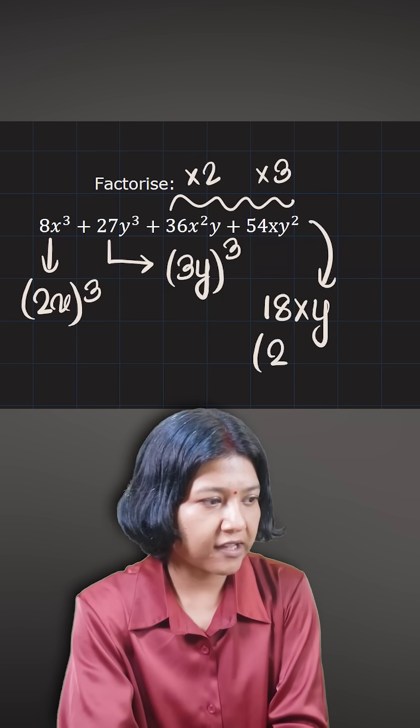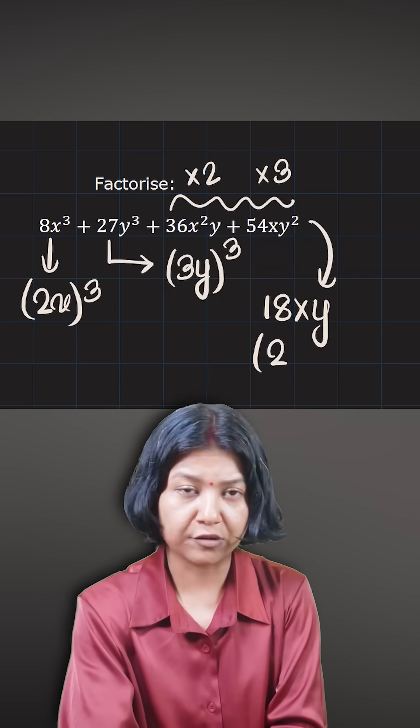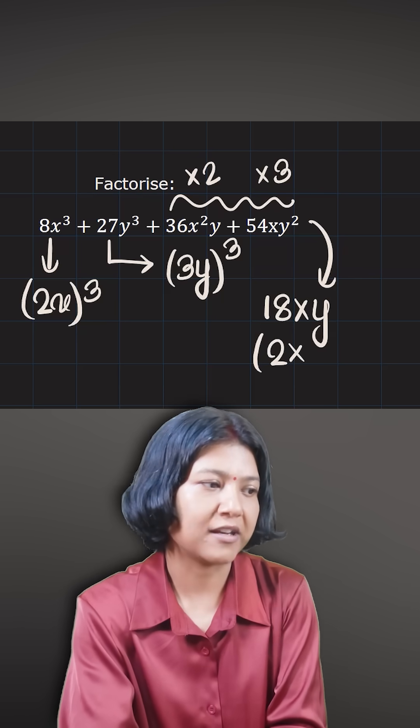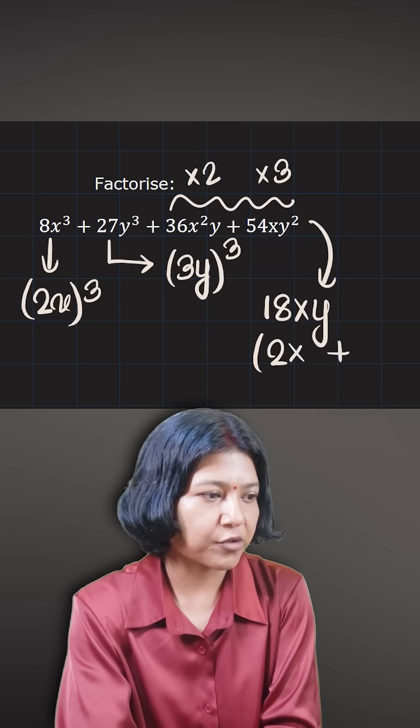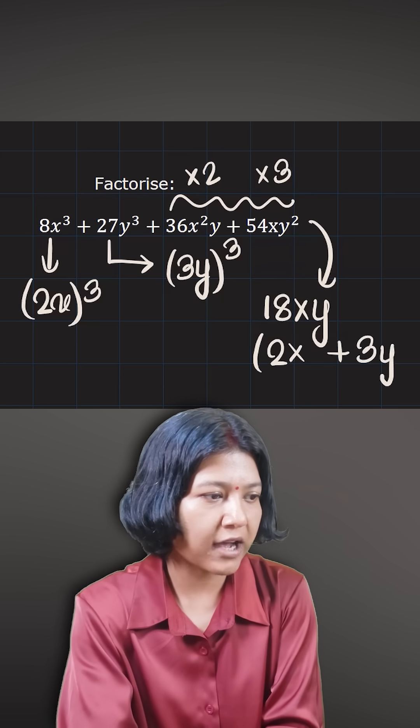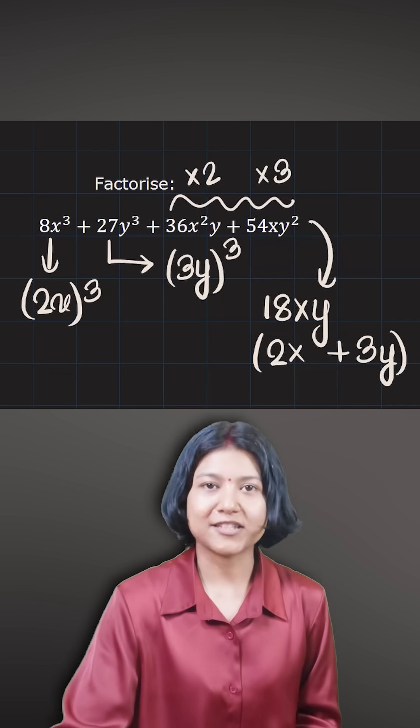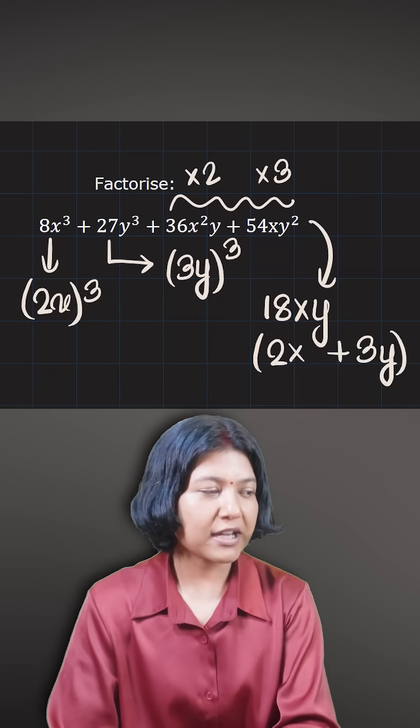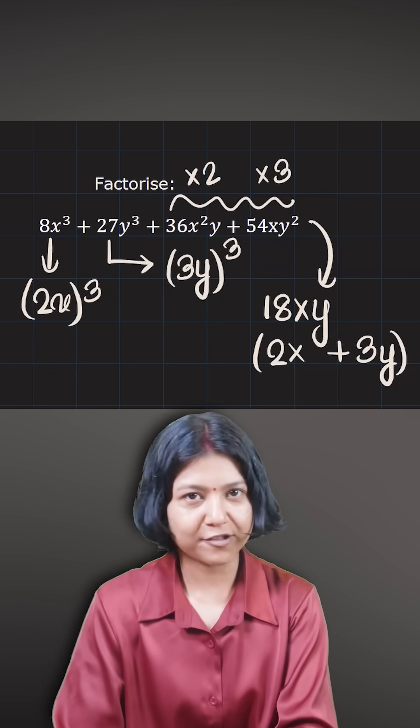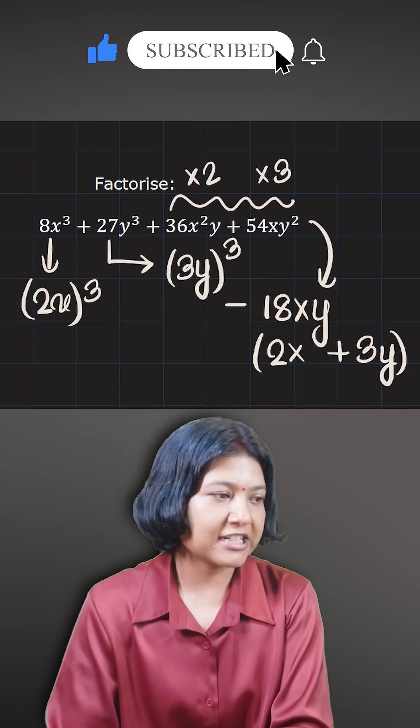18 times 2 is 36, one of the x and one of the y is outside, so we have one x remaining. So 2x is here. 18 into 3 is 54, we had two y's here, so only one of the y's is out. 2x plus 3y. If you see this, we have something cube plus another term cubed plus 18 times xy.